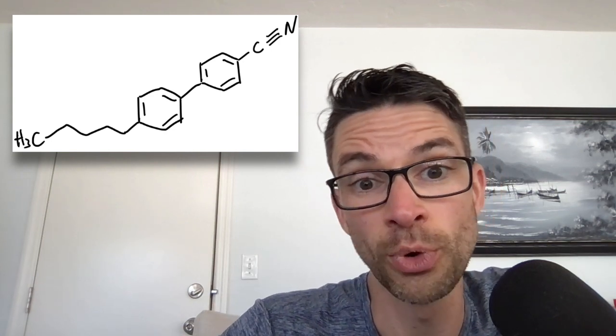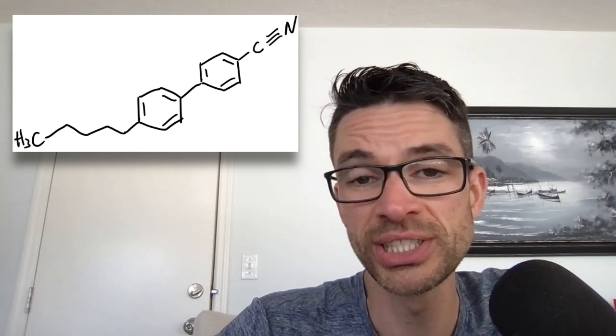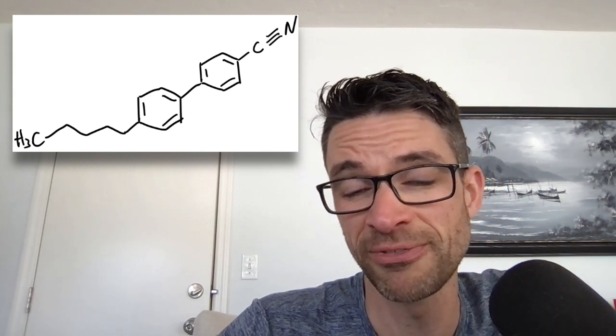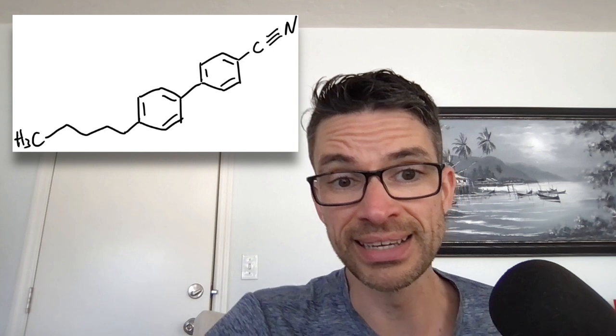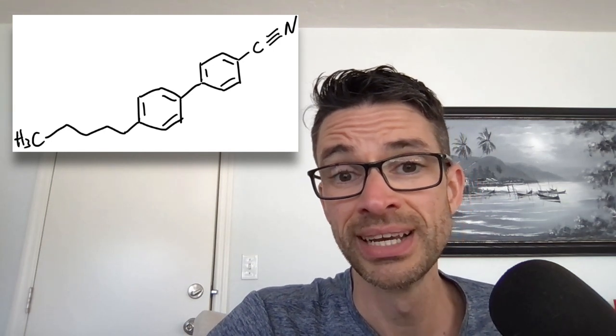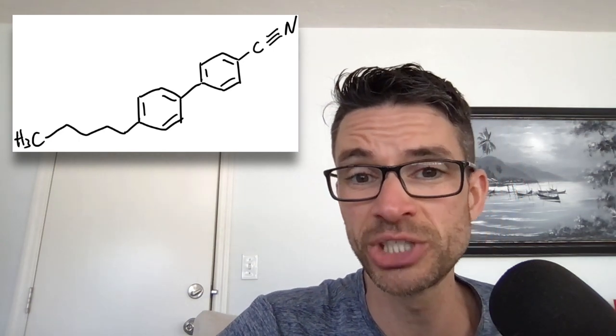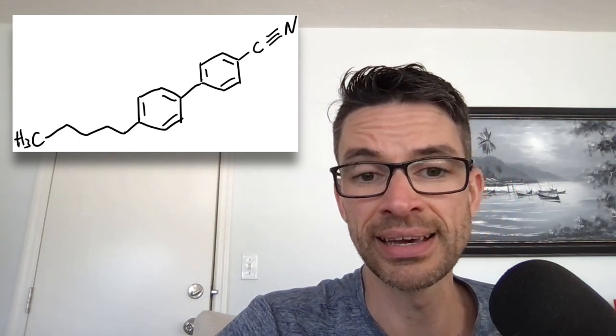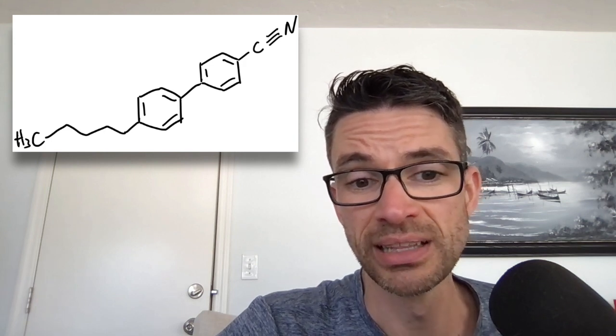So this structure here is 5CB, 4-cyano-4-pentyl biphenyl, which has a rigid structure, which is this biphenyl, those two benzene rings that are stuck together, and then this floppy pentyl structure, which makes it liquid. So the biphenyl part makes it crystalline or rigid, that's called the mesogen, and the floppy chain is the part that makes it liquid-like.